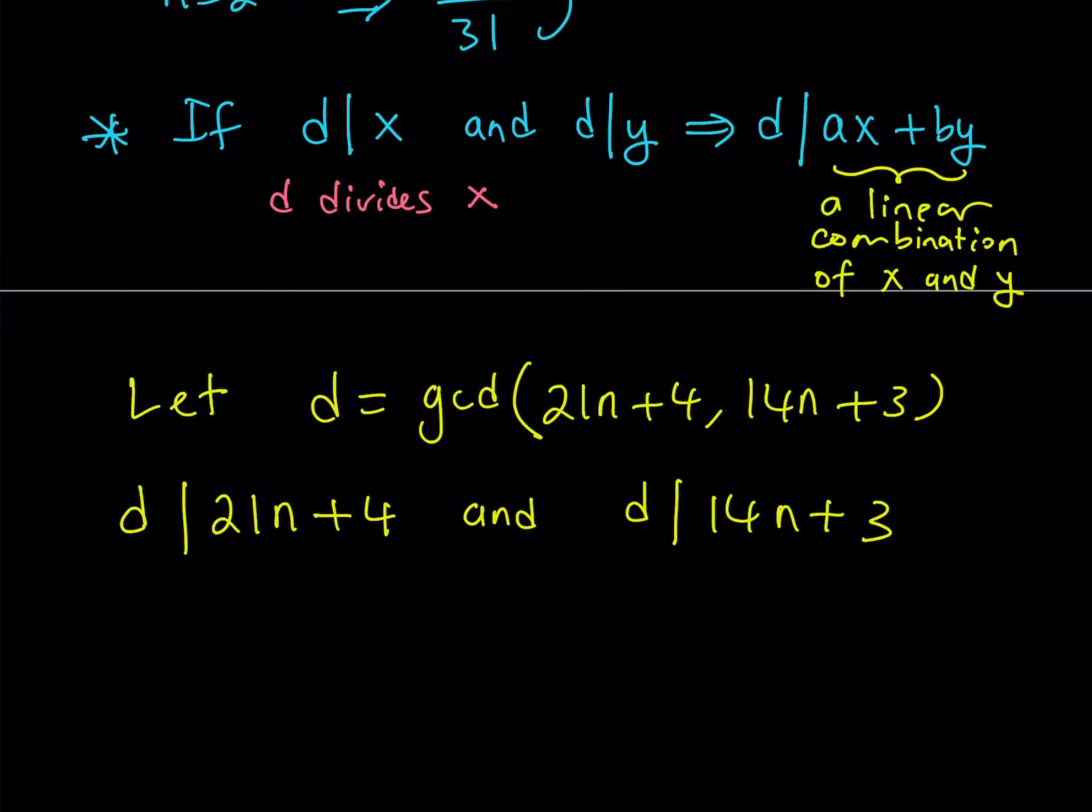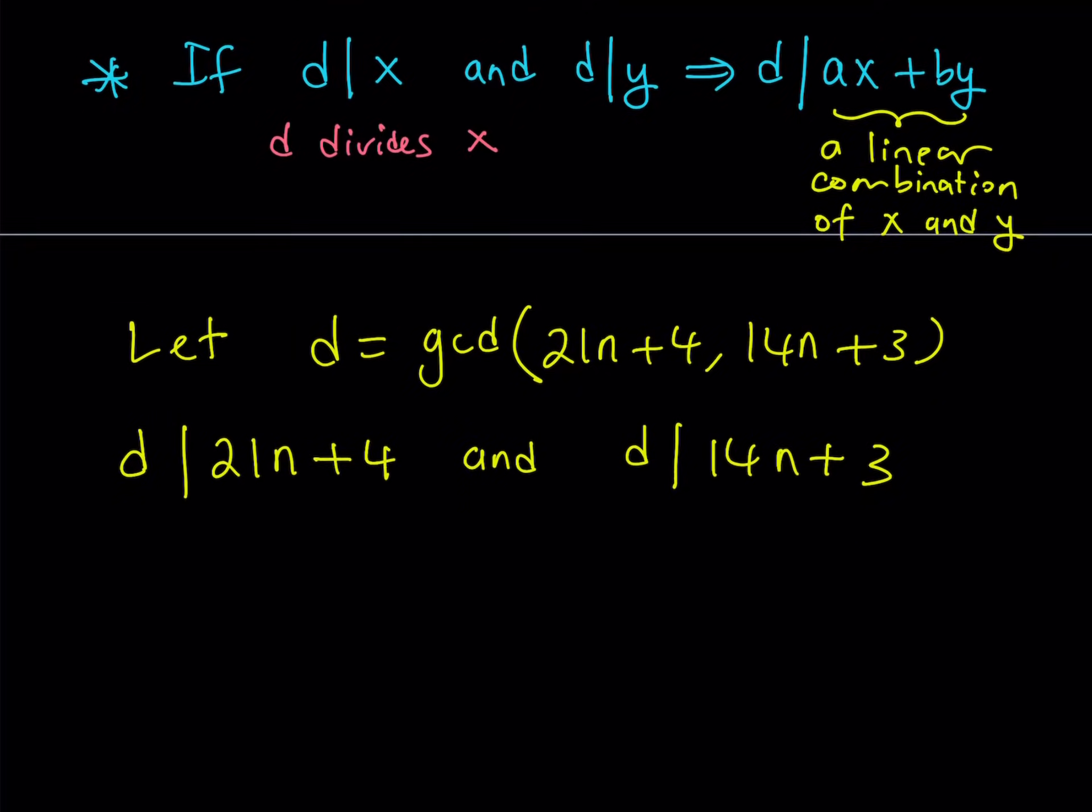Remember, we just talked about a rule, a theorem, which says d divides x and d divides y, that implies d divides ax plus by. We're going to be using that rule here. That property tells me basically that if I add the numerator and the denominator here and d still divides their sum, d divides their difference. But those don't really give me good values. So what I'd like to do here is different.